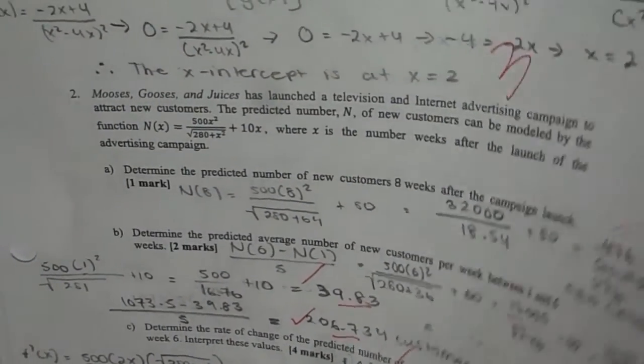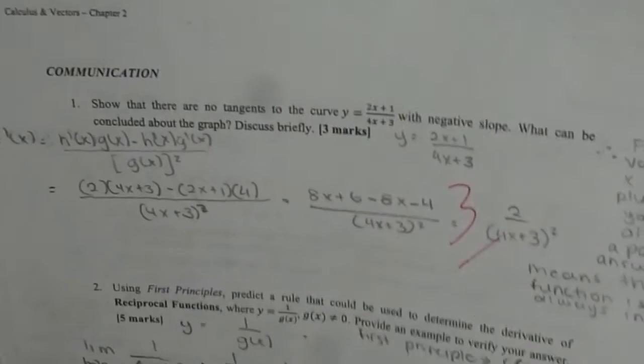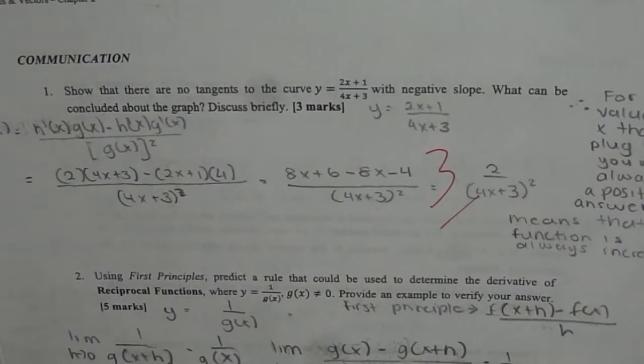And on the last page we have a few more. So it is a very balanced paper which says communication question show that there are no tangents to the curve y equals to 2x plus 1 divided by 4x plus 3 with negative slope. What can be concluded about the graph?